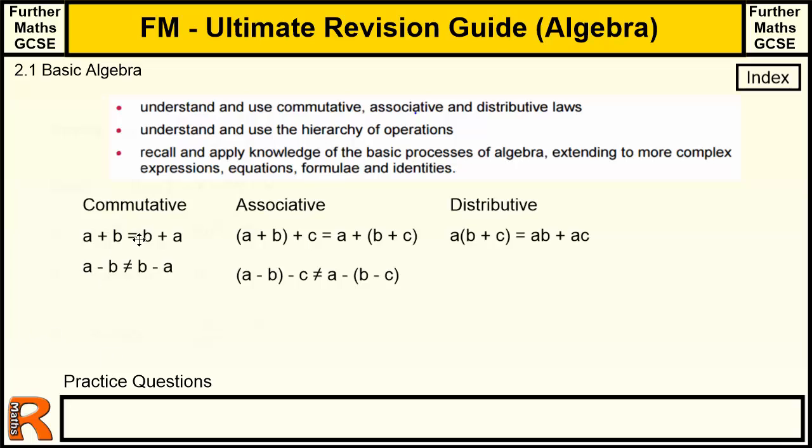The commutative laws: if an operation like adding or subtracting or multiplying or dividing is commutative, it means it doesn't matter which order you do it in. So for example, a plus b is equal to b plus a, so that's commutative. But with subtraction, it does matter which way around you do it. And a minus b is not always equal to b minus a, so that's not commutative. So adding is commutative, subtracting is not commutative. If you think about it, you should be able to figure out that multiplying is commutative and division is not commutative.